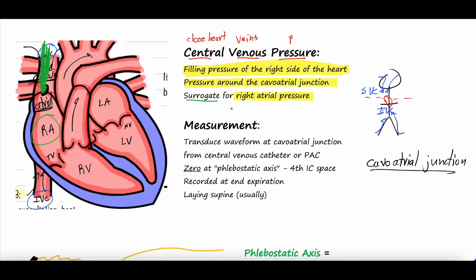This helps give us an idea of fluid status and cardiac function, because this is blood filling pipes and chambers. If you have a lot of blood in a pipe, you'll have a higher pressure; if you have just a little bit, you'll have a lower pressure. It's a simple way to get a foundational understanding of what CVP represents.